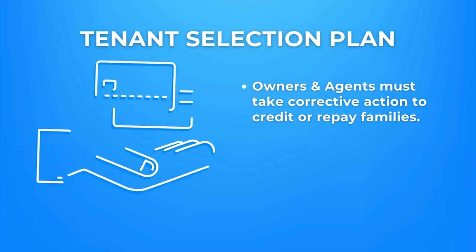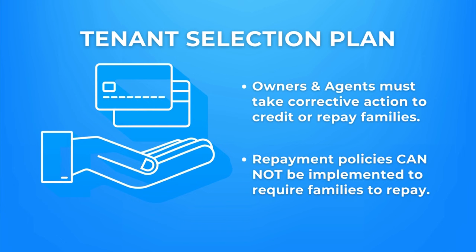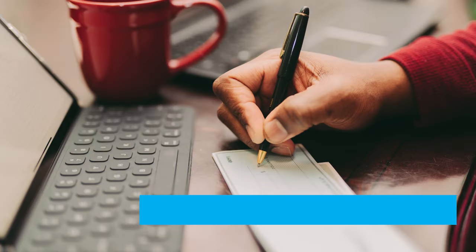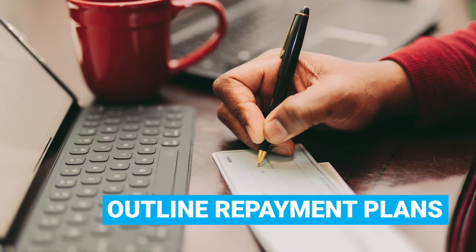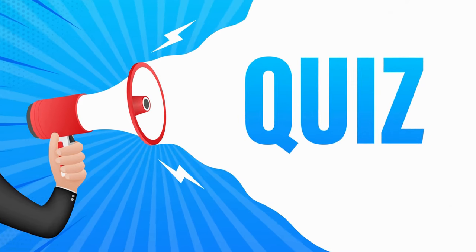It also states that owners and agents may not implement policies to require families to repay in instances resulting in the family being undercharged for rent where it's the multifamily owner or agent's error. Multifamily housing owners must include in their tenant selection plans how they will repay or credit a family the amount that the family was overcharged, retroactive to the effective date of the action the error was made, because of the multifamily owner's de minimis error in income determination.